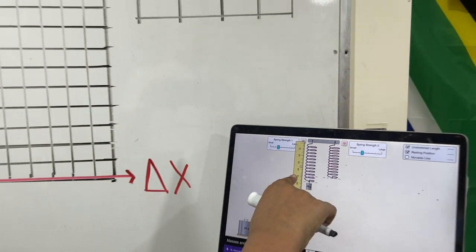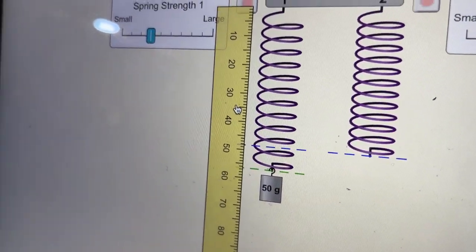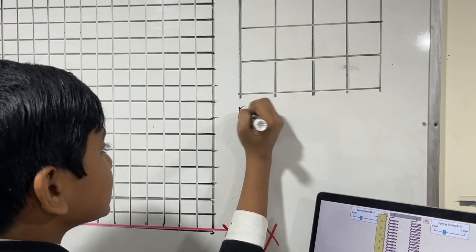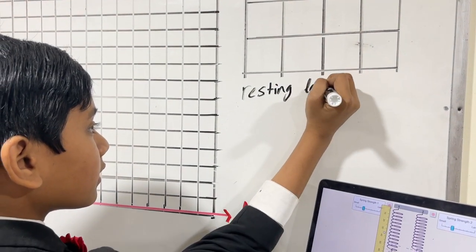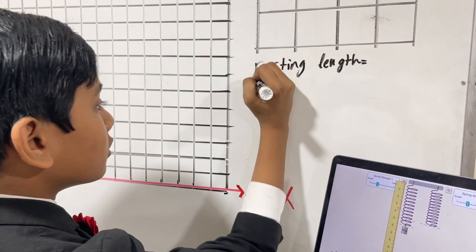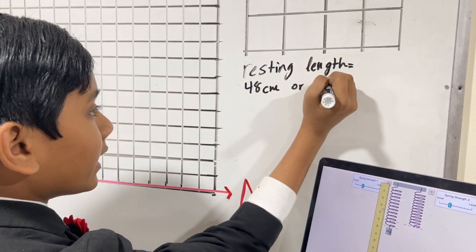So now, let's drop a 50 gram mass on there and see what happens. You can see this is the resting length of the spring. What is the resting length of the spring with respect to where it starts out? The resting length of the spring is approximately 48 centimeters.